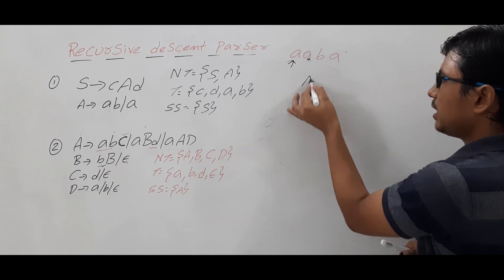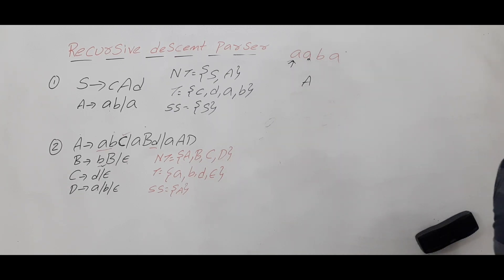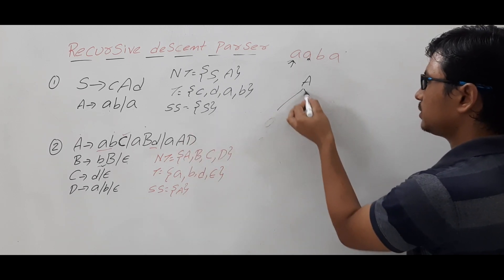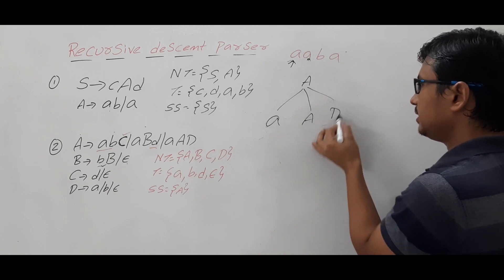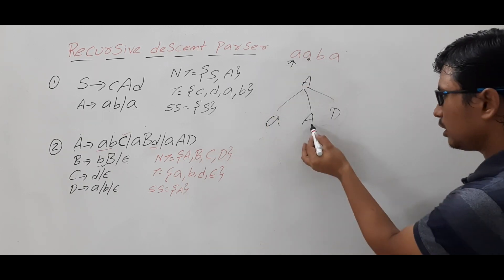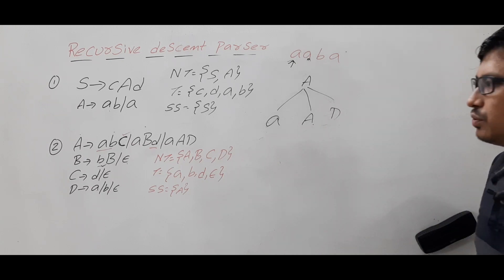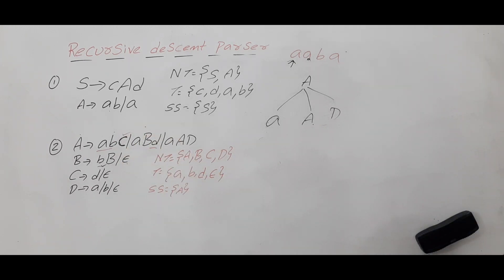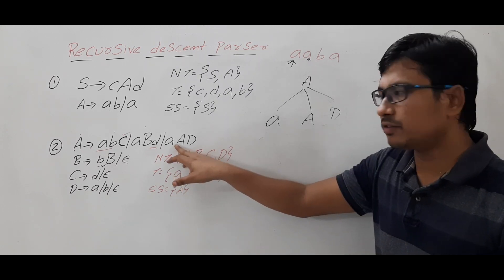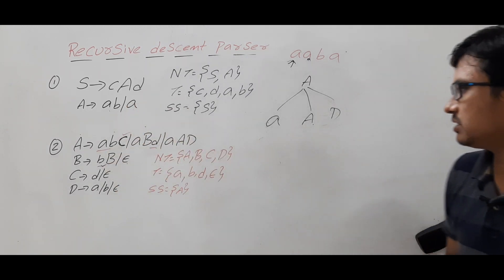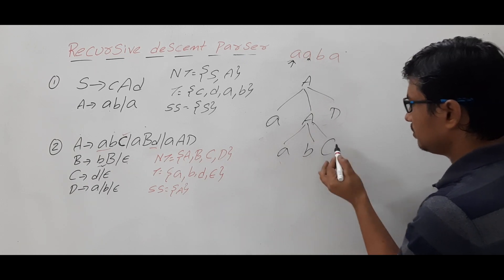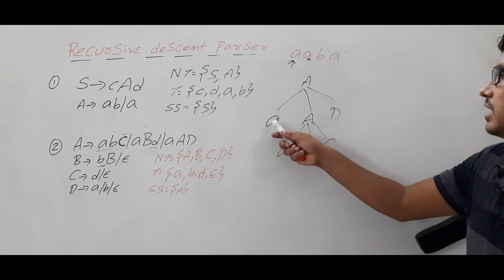After backtracking, the input pointer goes back and the descent pointer is back at non-terminal A. Now it uses the third production: A → AAD. A and A match, so the descent pointer shifts. Now it encounters A again as a non-terminal, and it starts fresh using brute force — it takes the first production A → BC, because here the decision taken is AAD and for each new A it starts from the first production.